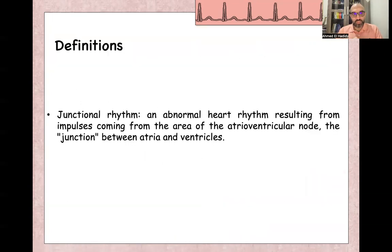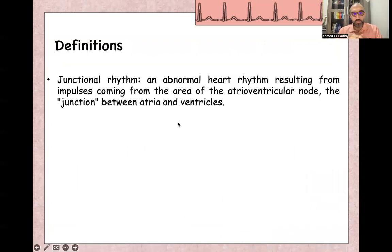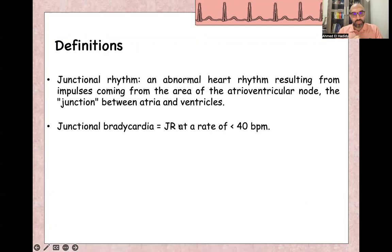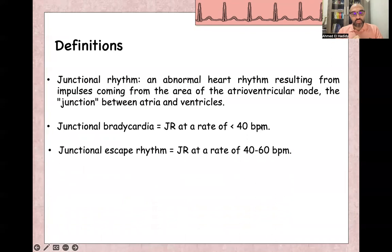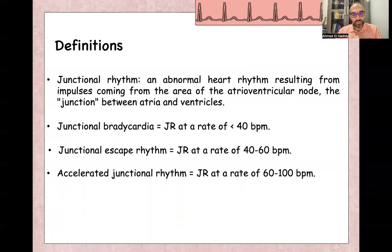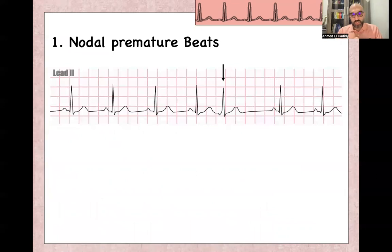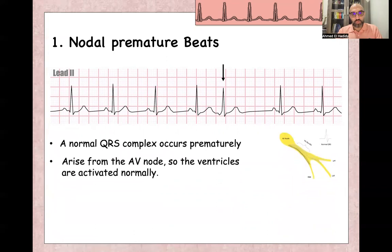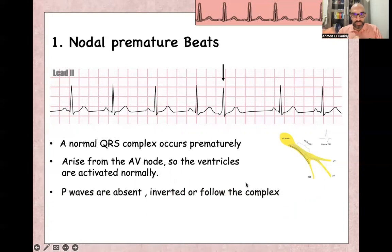As a definition for junctional rhythm: junctional rhythm itself is an abnormal heart rhythm resulting from the AV node or from the junction between the atria and ventricles. Junctional bradycardia is junctional rhythm at a rate of less than 40. Junctional escape rhythm is junctional rhythm at a rate of 40 to 60. Accelerated junctional rhythm is junctional rhythm at a rate of 60 to 100. Junctional tachycardia is rate more than 100. Nodal or junctional rhythm is usually a narrow complex beat, normal configuration, which appears prematurely, because it comes before the bifurcation of the bundle of His into right bundle and left bundle. P-wave is absent, inverted, or may follow the QRS complex.